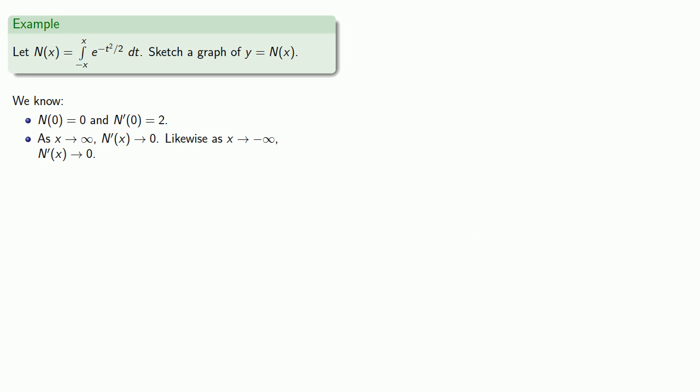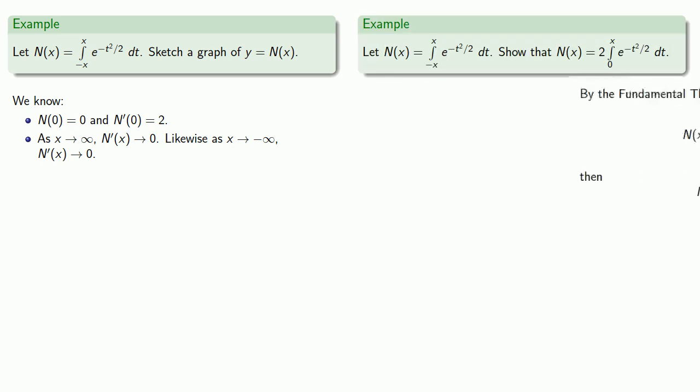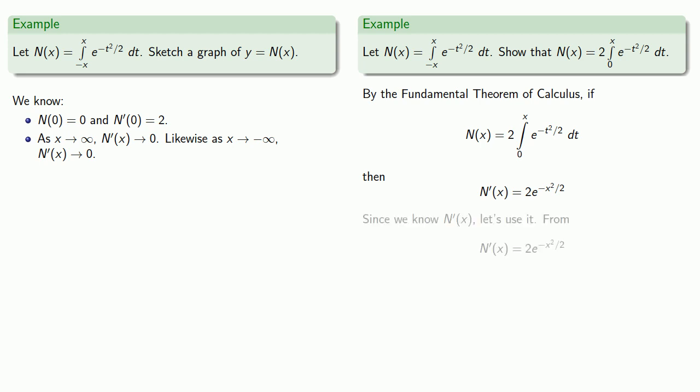Next, we were able to use some of the properties of the function and the fundamental theorem of calculus to find the derivative. Since we know the first derivative, let's make use of it. From the form n prime of x equals 2e to power minus x squared over 2, we see that because exponentials can never be 0 or negative, n prime of x is always positive.